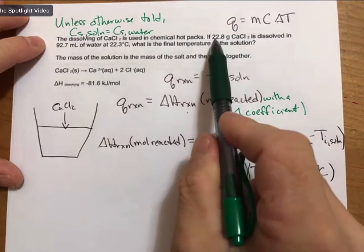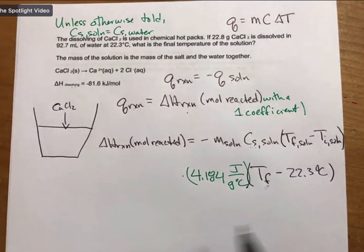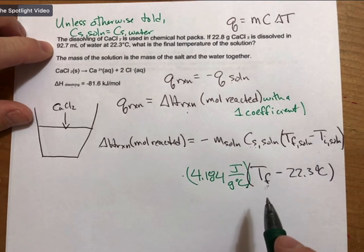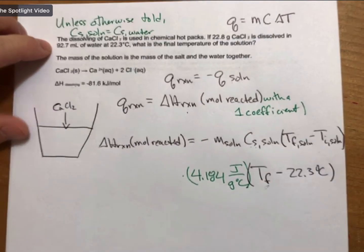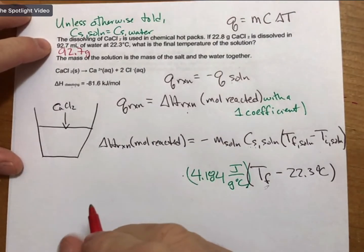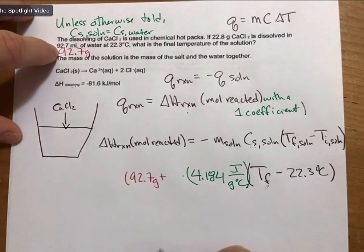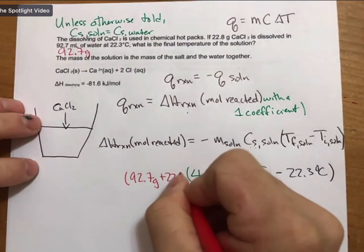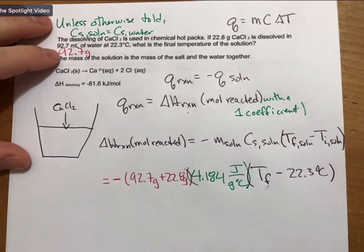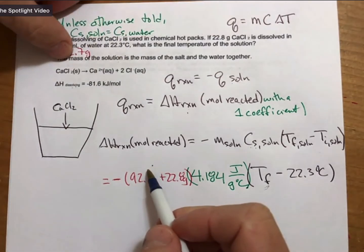So now I'm going to put in 4.184 joules per gram degree Celsius. That's for water. Put that in parentheses as well because I have my mass of my solution. And here's where we call out the mass of the solution is the mass of the salt and the water together. I have 22.8 grams of calcium chloride. I have 92.7 milliliters of water. From lab this past week or from the lecture outlines, we know that water is one gram per milliliter. So this is going to be 92.7 grams.